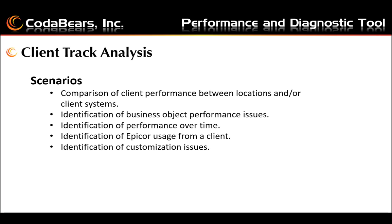For identification of customization issues, client customizations may cause unexpected or excessive calls to business object methods. For example, a poor customization could cause multiple calls to a method not made by the base application. Compare the trace logs that track the same functions with and without the client customizations — this method may help identify performance issues.